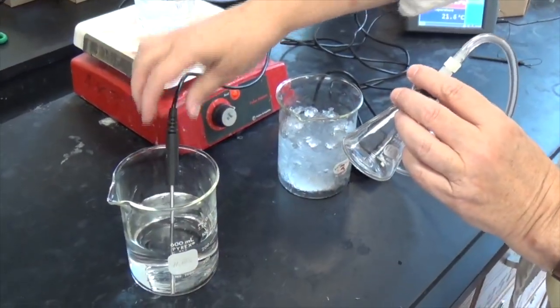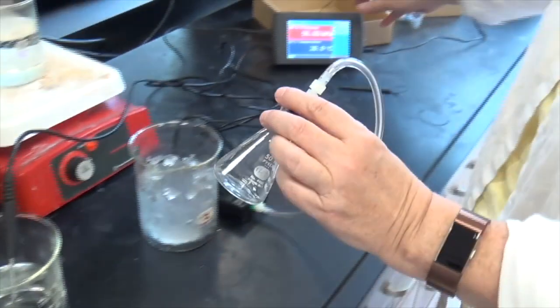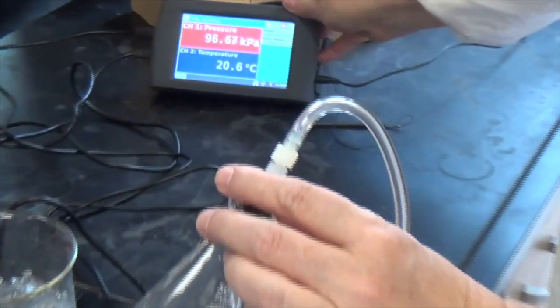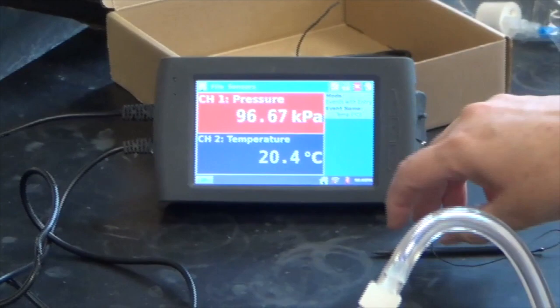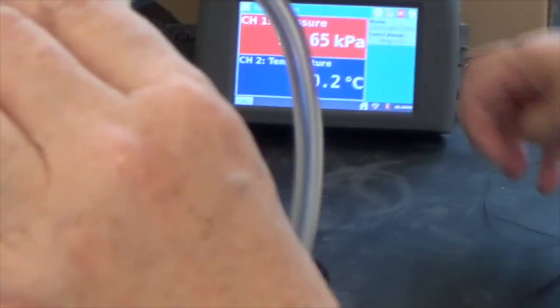Now starting with the room temperature water place your temperature probe inside and wait until you have a stable reading. In this case 20.4 degrees Celsius.